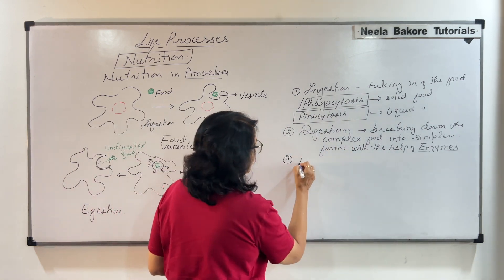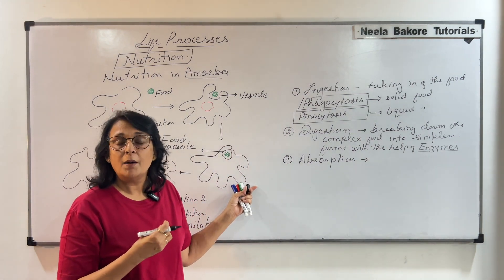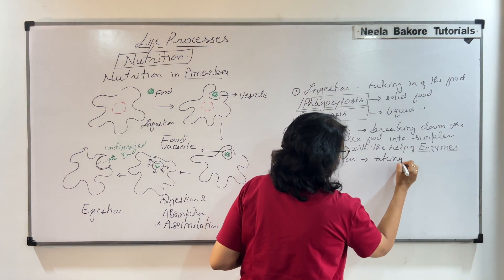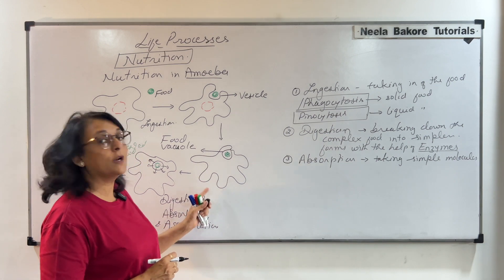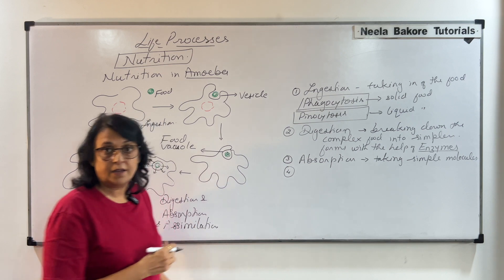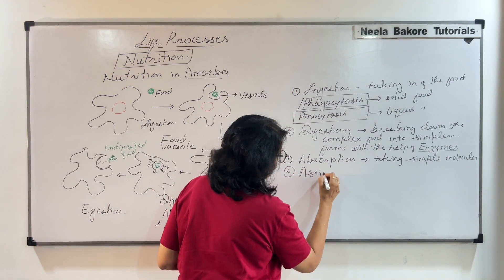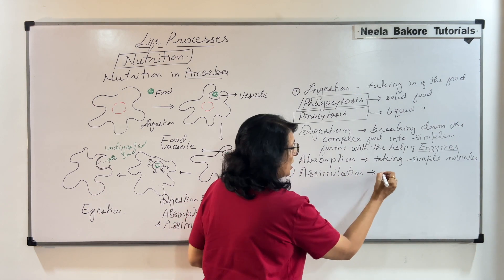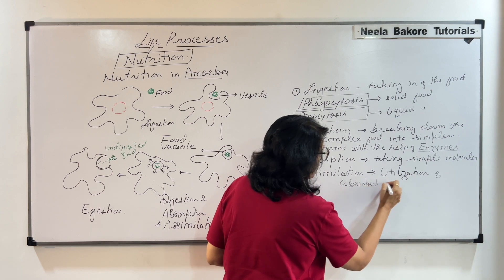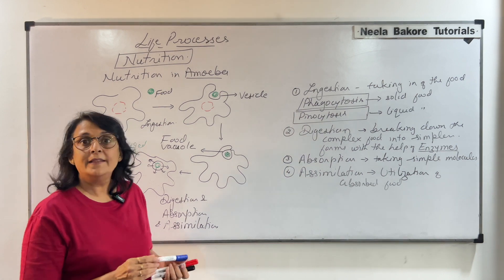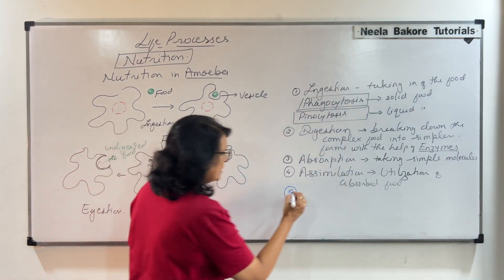After digestion, these simpler molecules can be absorbed, so the next step is absorption. Absorption is taking in these simple molecules. What does amoeba do with these simple molecules? It uses them for growth, reproduction, and locomotion. That is called assimilation — the utilization of absorbed food.